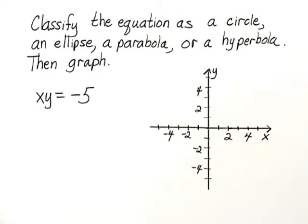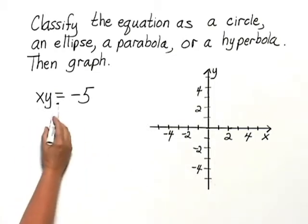Classify the equation as a circle, an ellipse, a parabola, or a hyperbola, then graph. We're looking at the equation xy equals negative 5.